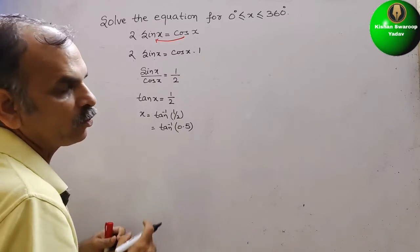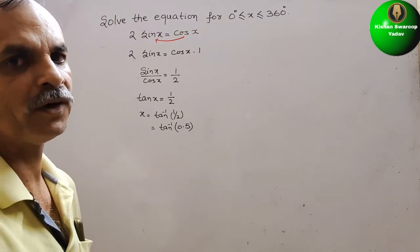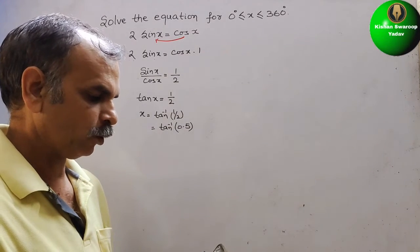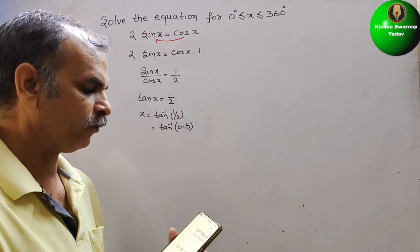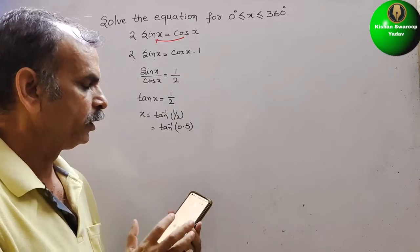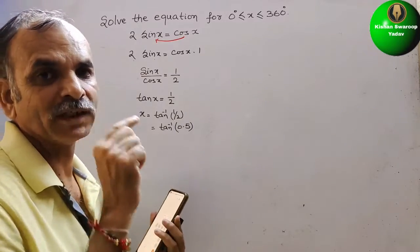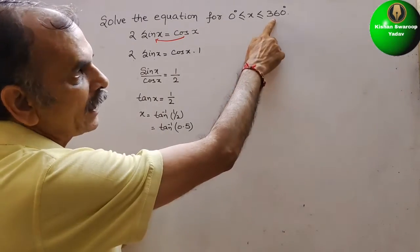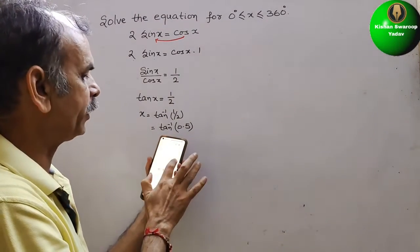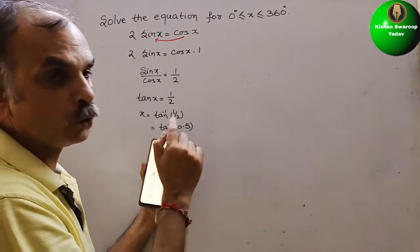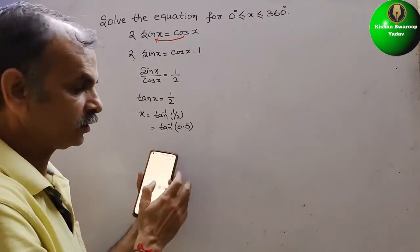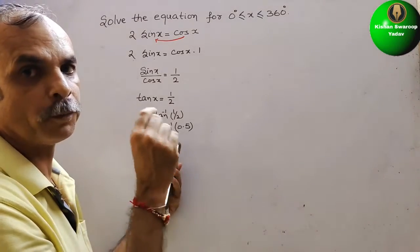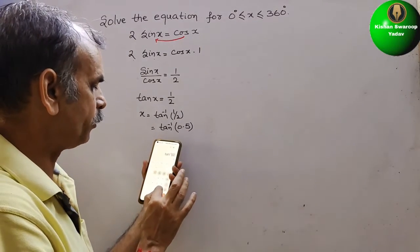So first we will find out this value with the help of a scientific calculator. So we will open our calculator. What we have to do? I will tell you. First we have to select inverse, then we have to select degree, then we have to press tan inverse, and we have to type 0.5.